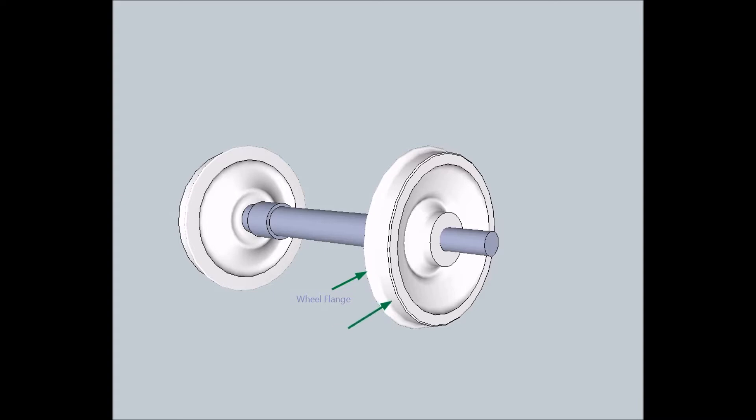That's the second component of wheel, it is wheel tread that make wheel rotate above rails.